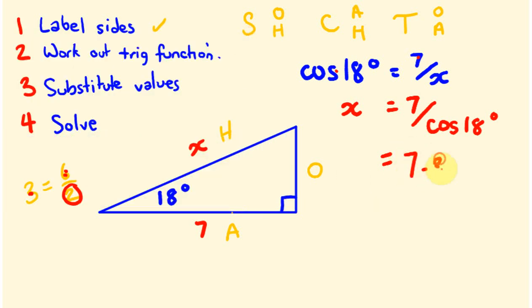Alright, 7.36. And you can look at it and say - that's actually the hypotenuse there - that makes sense. It's a longer sort of length, and it's a pretty shallow angle, so it's not going to be a huge amount longer. It's a fairly reasonable sort of answer. So how did you go with this? Hopefully pretty good. In the next video we're going to be having a look at using sides to work out unknown angles - it's a very similar sort of rules. I hope to see you then. Bye.